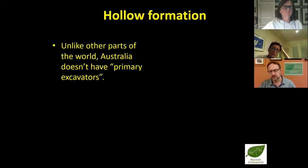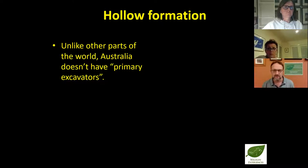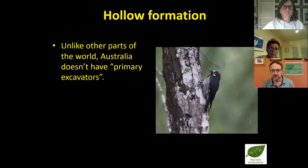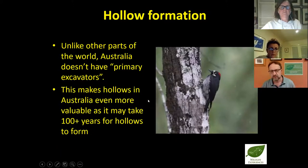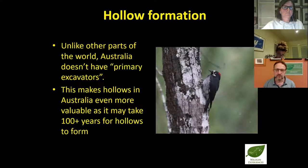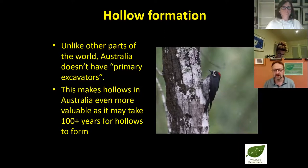The hollow formation process in Australia is completely different to elsewhere because Australia doesn't have what are called primary excavators — animals that will go ahead and create hollows for themselves. The most well-known example of this group is woodpeckers, which bang holes into trees to create hollows. We don't have woodpeckers in Australia. So hollow formation may take up to a hundred years or more. Those big old red gums in the northern suburbs of Melbourne could be two or three hundred years old, and for the first hundred years they don't provide a hollow at all — the older they get, the more chance of hollows forming.